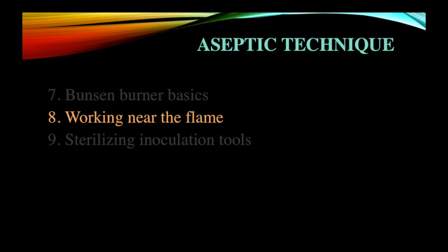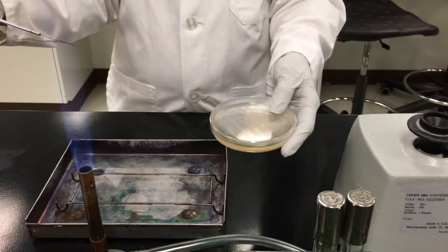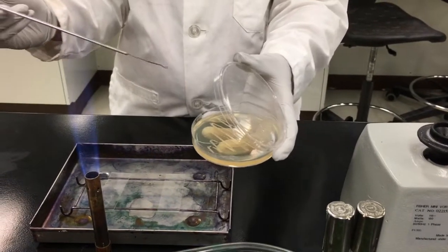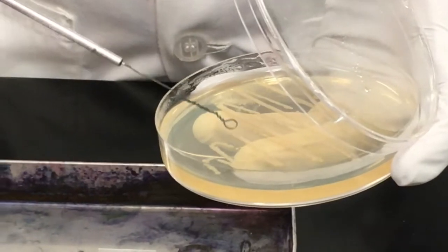Working near the flame is key to having aseptic technique. The zone of sterility created by the Bunsen burner flame is not a very large area and is only maintained by having this steady flame. Work slowly and meticulously and only open sterile items within this zone for a limited amount of time and only when they are immediately needed.